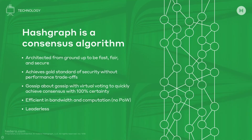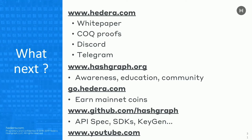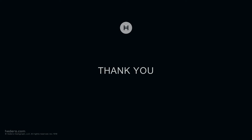In conclusion, Hashgraph as an algorithm, implemented by Hedera as a public network, achieves the gold standard of security with asynchronous Byzantine fault tolerance. It's incredibly fast, bandwidth efficient, and leaderless, with open access launching Q1 2019. We have test nets running now. For more information, hedera.com has a white paper, the Coq formal proofs on the algorithm, a Discord channel for developers, a Telegram channel for non-developers, hashgraph.org for education, and SDKs on GitHub. Thank you very much.